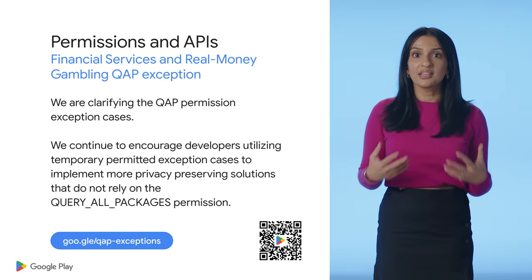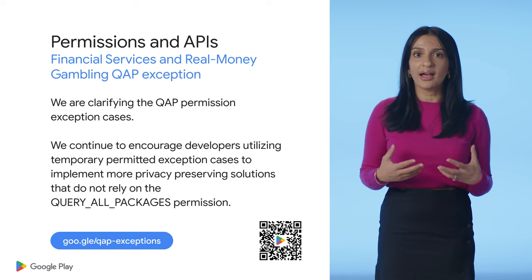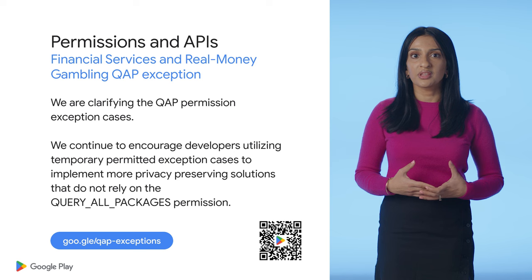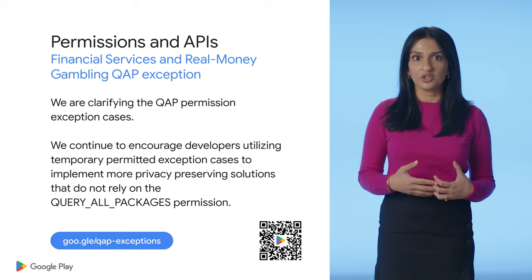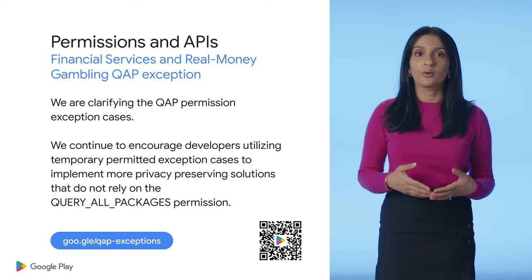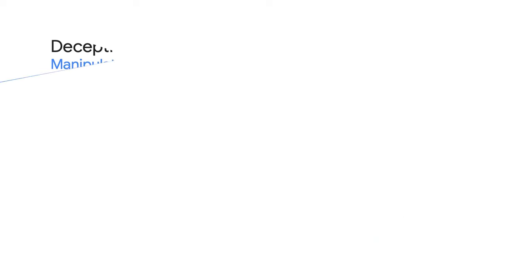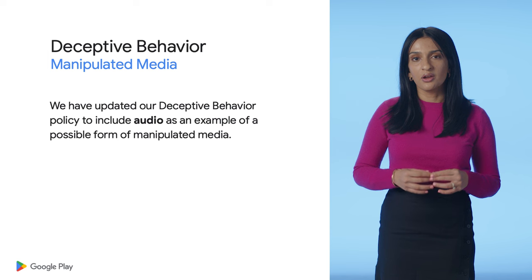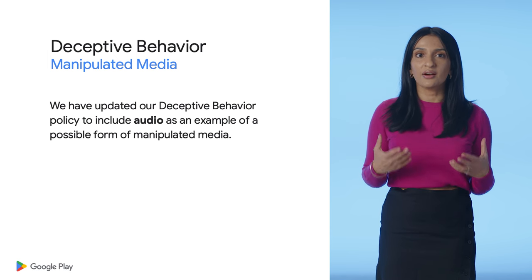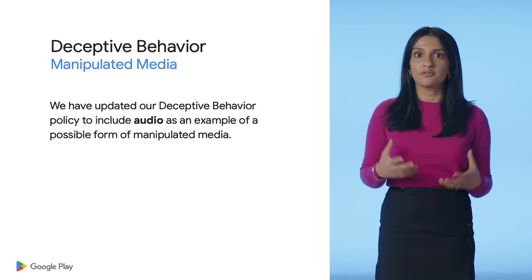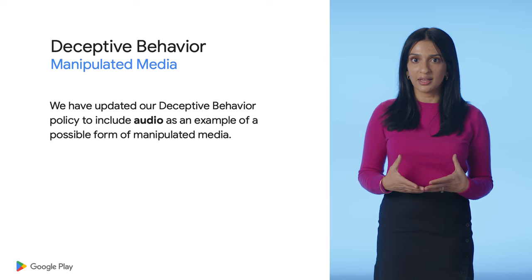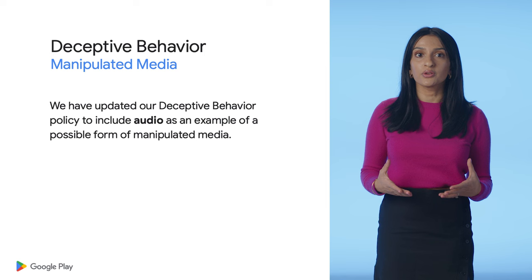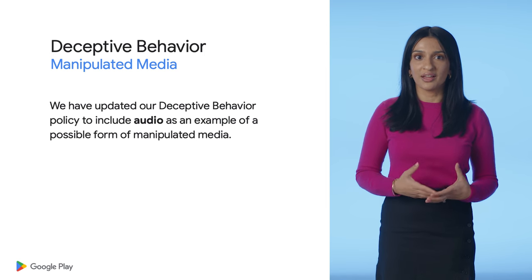Google Play is continuously encouraging developers to proactively implement alternative security or fraud prevention solutions that do not rely on the Query All Packages permission. You can review this update by visiting the link or scanning the QR code. Next is the update on manipulated media under the Deceptive Behavior Policy. We already have an existing guideline where we don't allow apps that promote or help create false or misleading information or claims conveyed through imagery, videos, and/or text, and have now included audio to cover a wider scope to prevent deception.